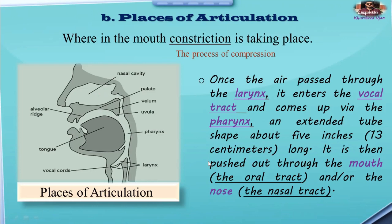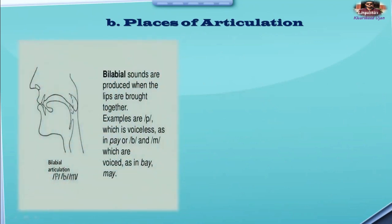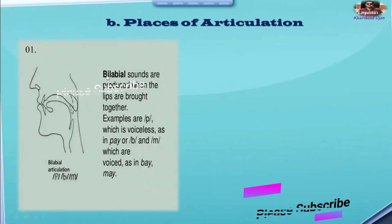We are going through the places one by one. Number one: bilabial sounds. Bilabial sounds are produced when the lips are brought together. If you look at this picture, we are bringing together the lips. Examples are voiceless sounds as in /p/, and voiced sounds as in /b/ or /m/. Such sounds are known as bilabial sounds in English.